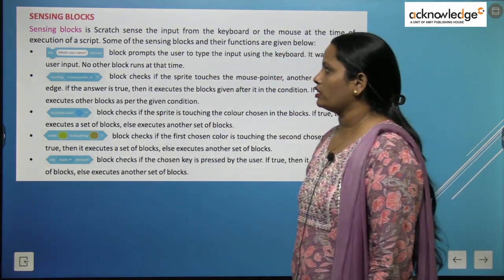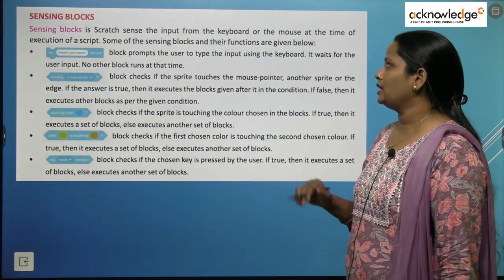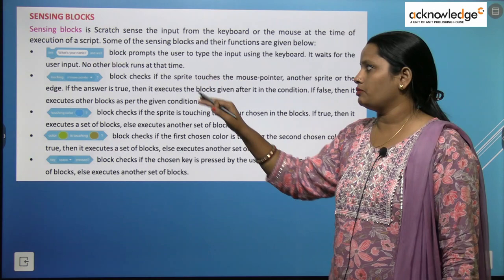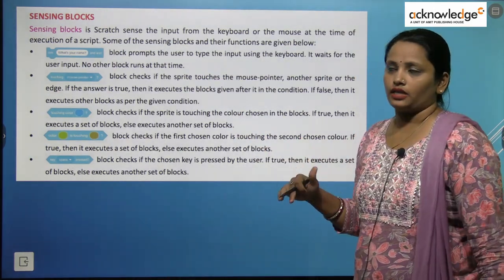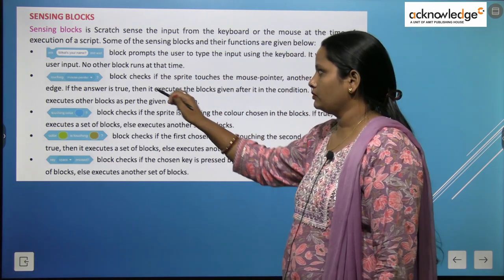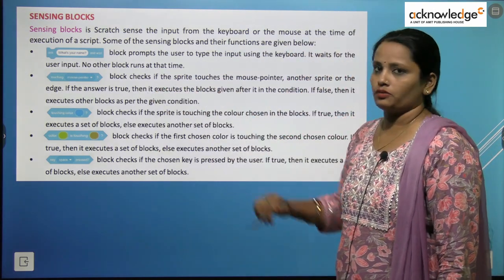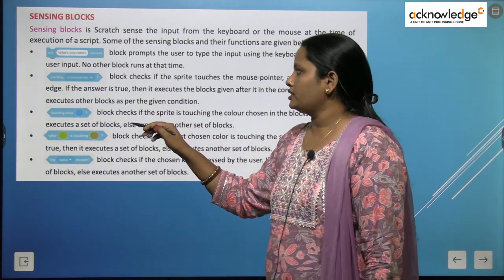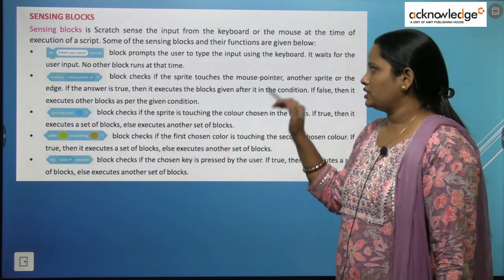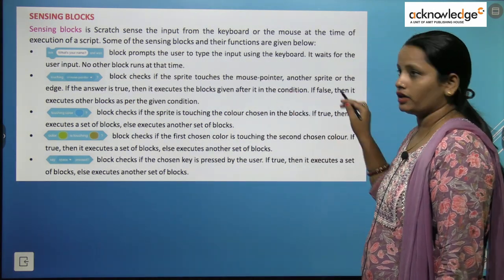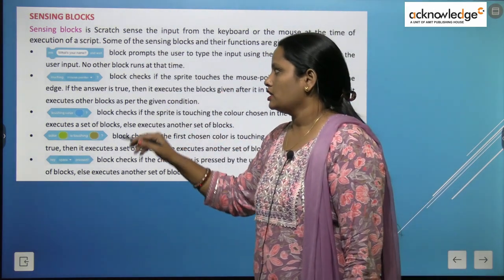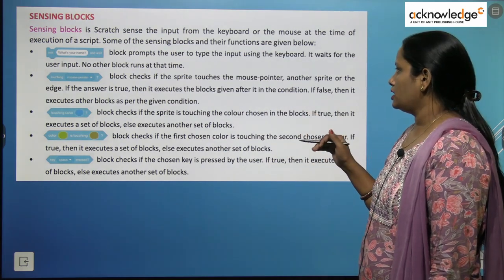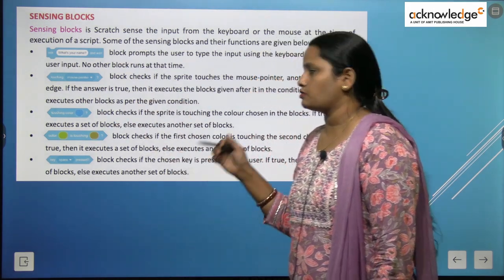The 'What is your name?' block prompts the user to type input using the keyboard. It waits for the user's input — no other block runs at that time. Next is the touching mouse pointer block. This block checks if the sprite touches the mouse pointer, another sprite, or the edge. If the answer is true, it executes the block given after it in the condition; if false, it executes the other block as per the given condition.